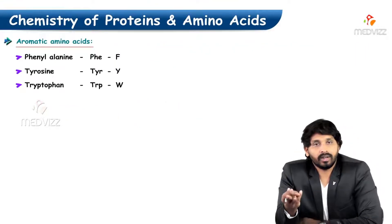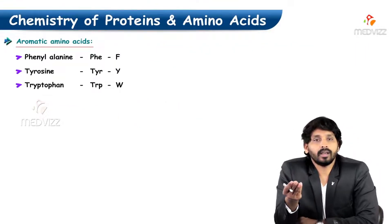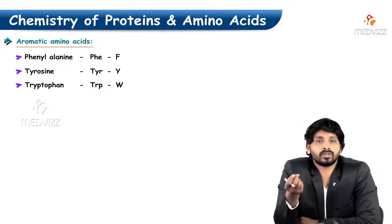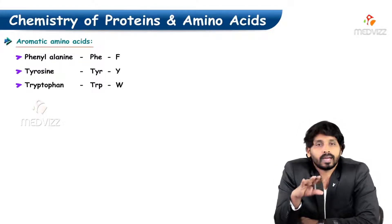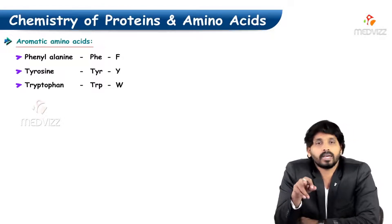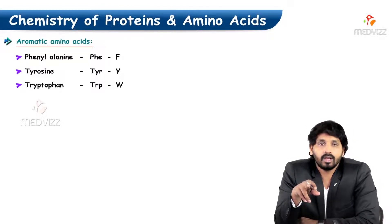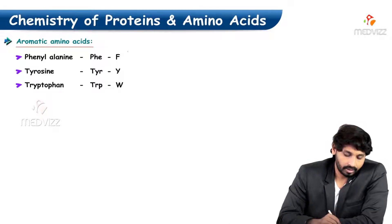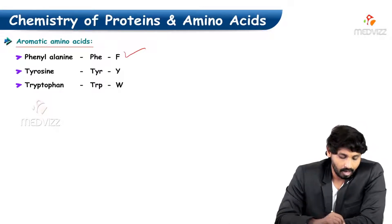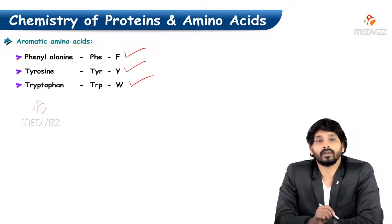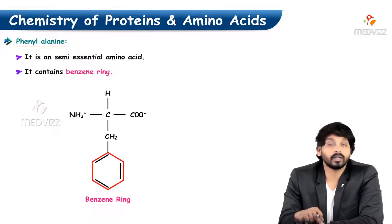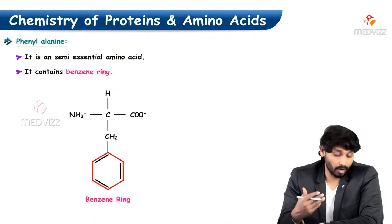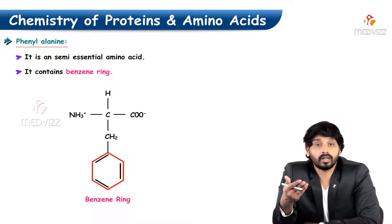There are three aromatic amino acids that are very important to study: phenylalanine, tyrosine, and tryptophan. Phenylalanine is essential, tyrosine is not essential, and tryptophan is again essential. Phenylalanine is represented by the symbol F, tyrosine by Y, and tryptophan by W. These are the main points regarding aromatic amino acids, and we will see them one by one.